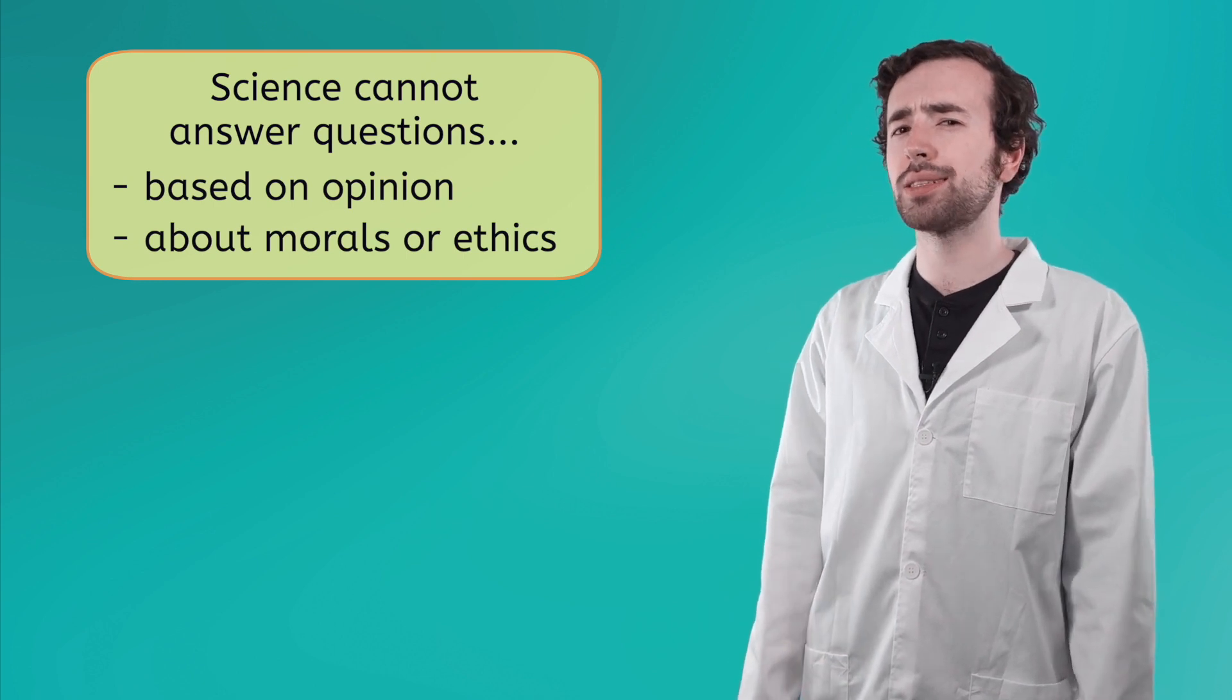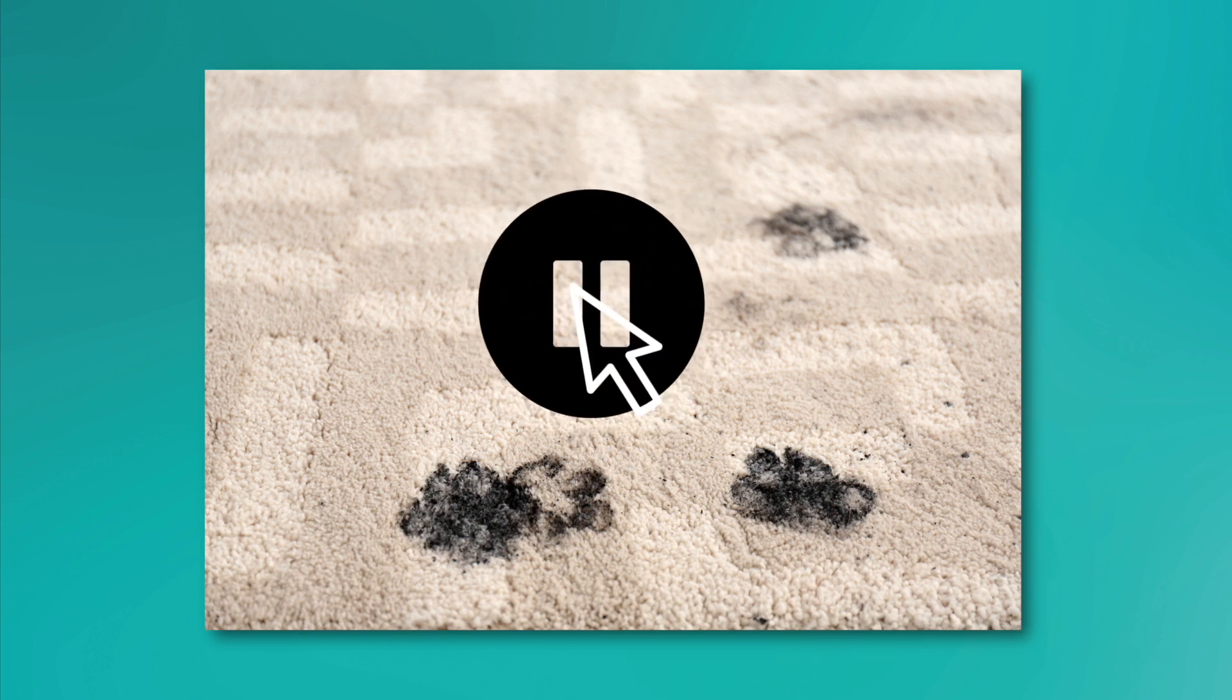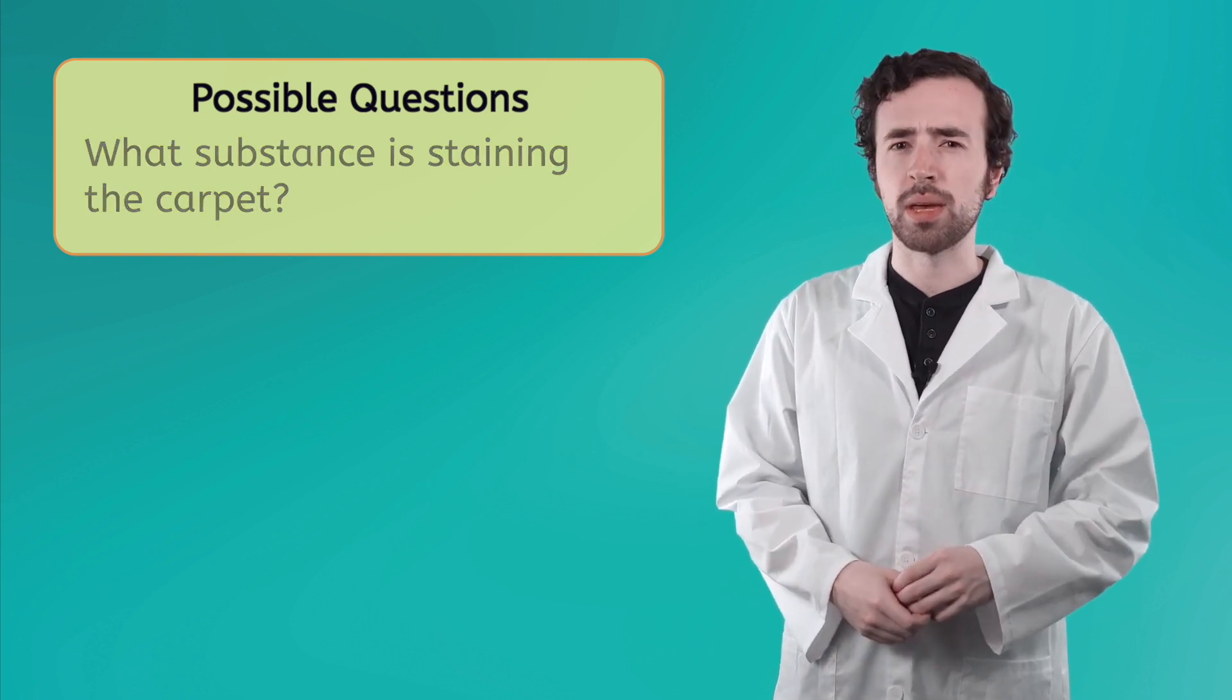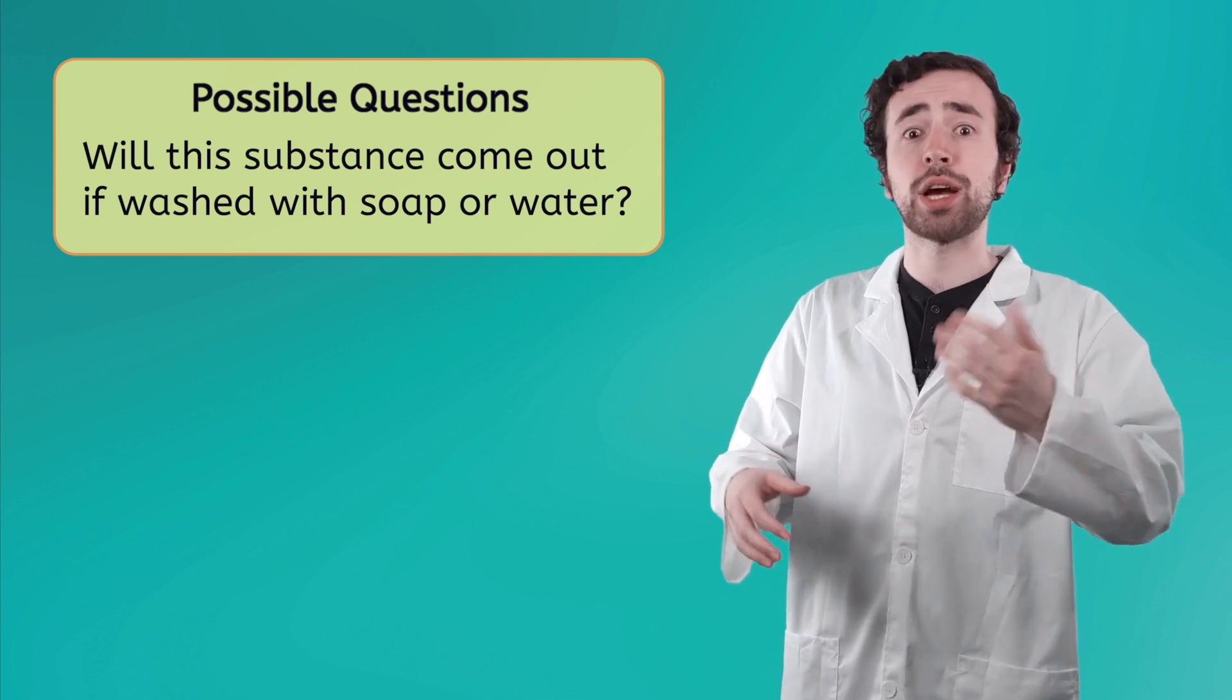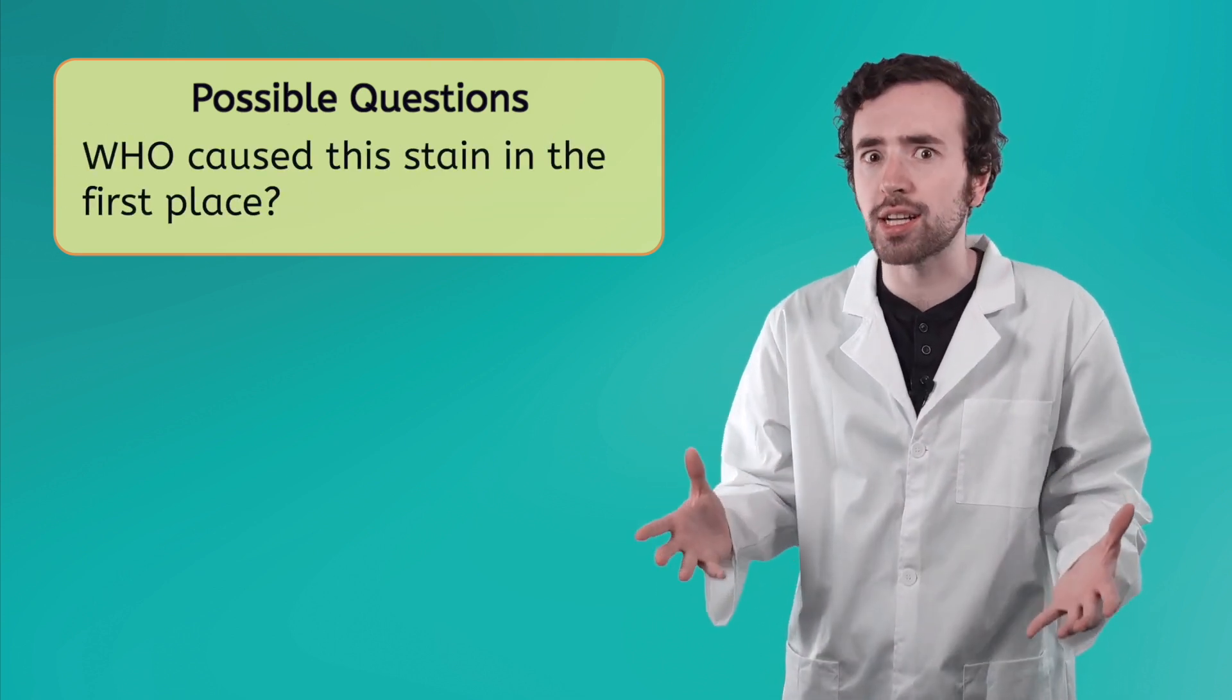Speaking of, let's go back to that ongoing investigation. In this scenario, based on our observations and inferences so far, what do you think are some good scientific questions we could ask? Pause the video here and try to write down at least three. But it's okay if you get stuck. What did you come up with? You might have thought to ask, What substance is staining the carpet? Or maybe, Is this substance something that we can wash out easily with soap and water? Or maybe even, Who caused those stains?